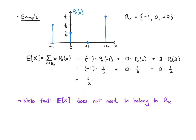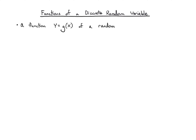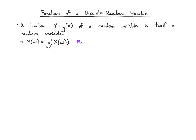Now let's talk about functions of a discrete random variable. Often we're not just interested in the random variable itself — we might care about some function like the square of the random variable. The key thing to remember is that a function of a random variable is itself a random variable. Formally, a random variable is a mapping from the sample space, so y = g(X) is a composition of mappings from the sample space to the real line — first via X, then via g — which is still a mapping from the sample space to the real line.